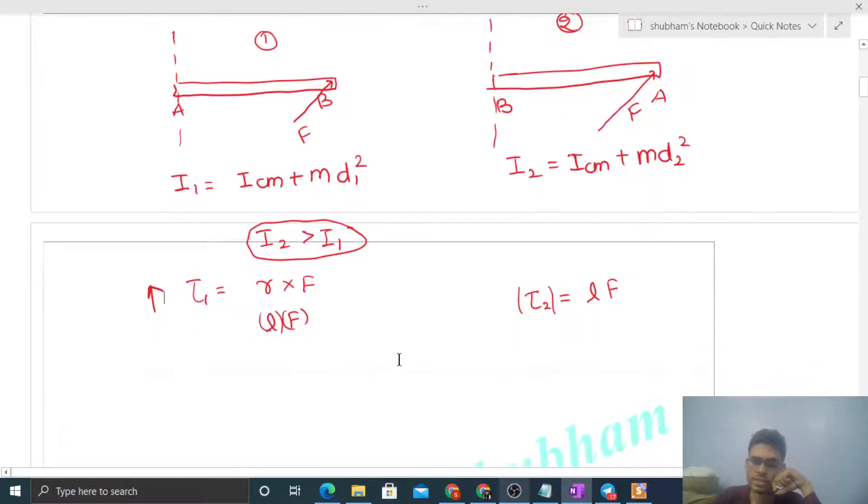For angular acceleration, alpha 1 equals torque 1 divided by I1, and alpha 2 equals torque 2 divided by I2. Since torque 1 equals torque 2, and I2 is greater than I1, therefore alpha 1 will be greater than alpha 2, because alpha is inversely proportional to I.